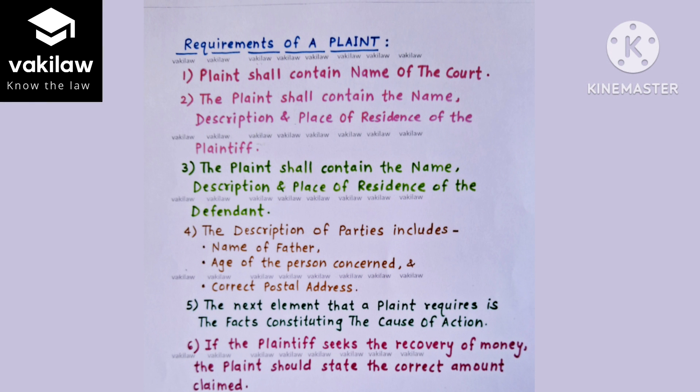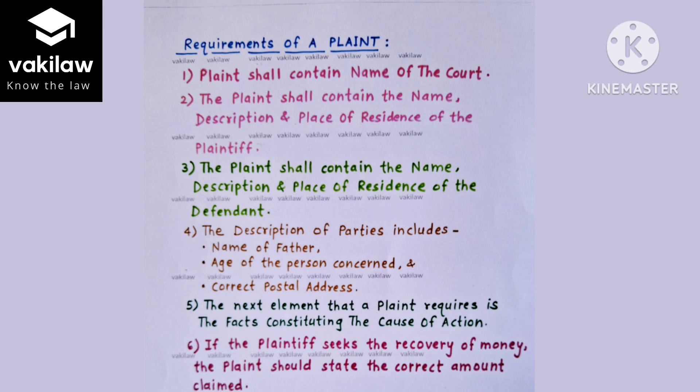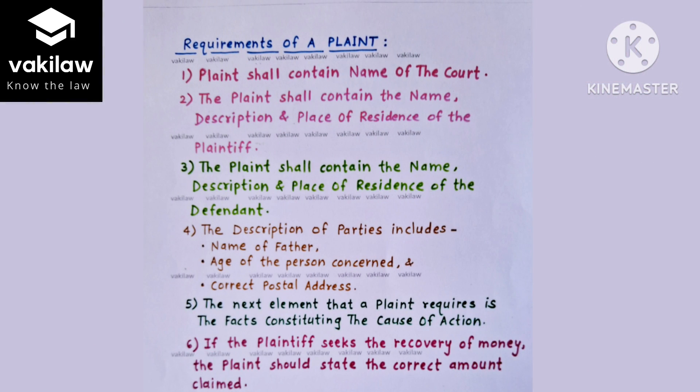Now let us discuss the actual requirements of a plaint. The first requirement is that the plaint shall contain the name of the court — for example, 'In the Court of District Judge at [city]', or 'In the Court of Small Causes at [place]', or 'In the High Court of Judicature at [place]', or 'In the Supreme Court of India at New Delhi'.